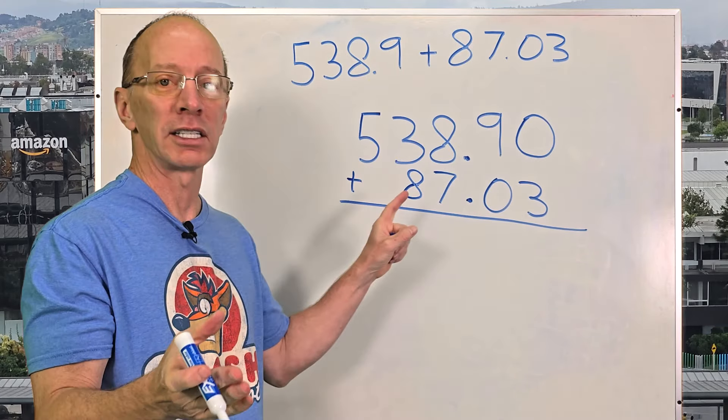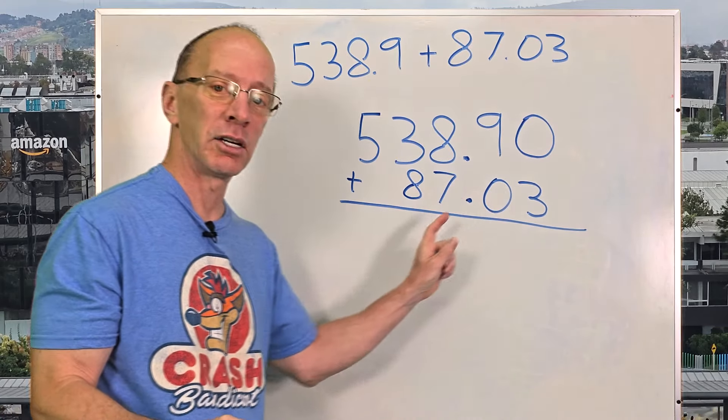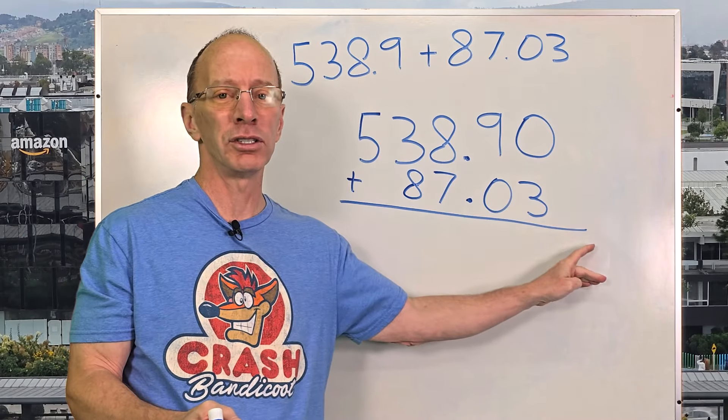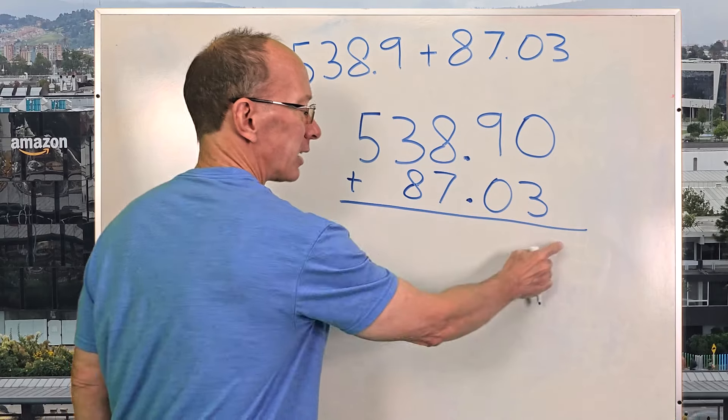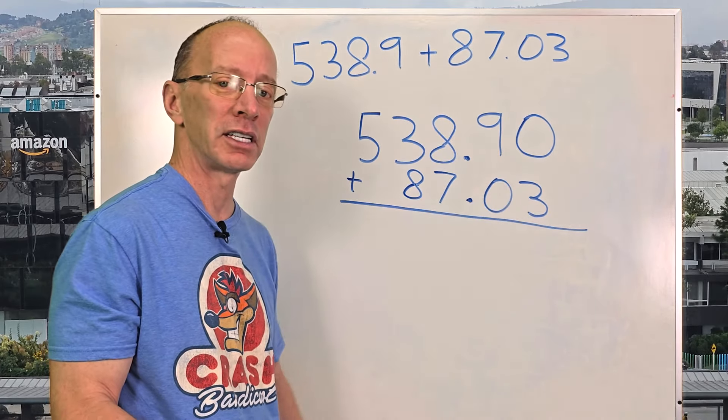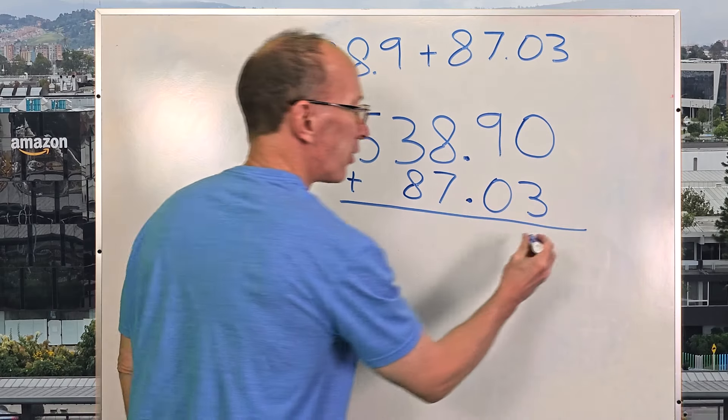And then now we're set to go. So just like addition, when we started adding the ones first, we're moving all the way over to the right side of the problem here. So I'm going to add three plus zero equals three.